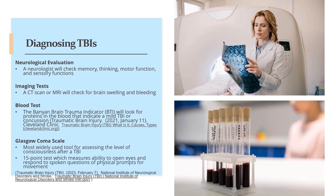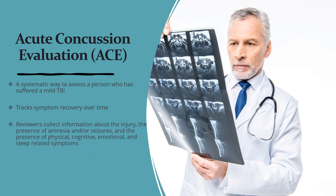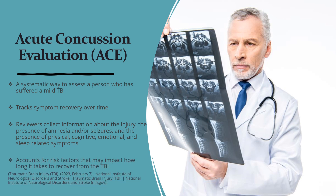The Glasgow Coma Scale is the most widely used tool for assessing the level of consciousness after a TBI. This 15-point test measures a person's ability to open their eyes and respond to spoken questions or physical prompts for movement. The Acute Concussion Evaluation, or ACE, is a systematic way to assess a mild TBI, tracking symptom recovery over time by collecting information about the injury, presence of amnesia and/or seizures, and physical, cognitive, emotional, and sleep-related symptoms, as well as risk factors that may impact recovery time.